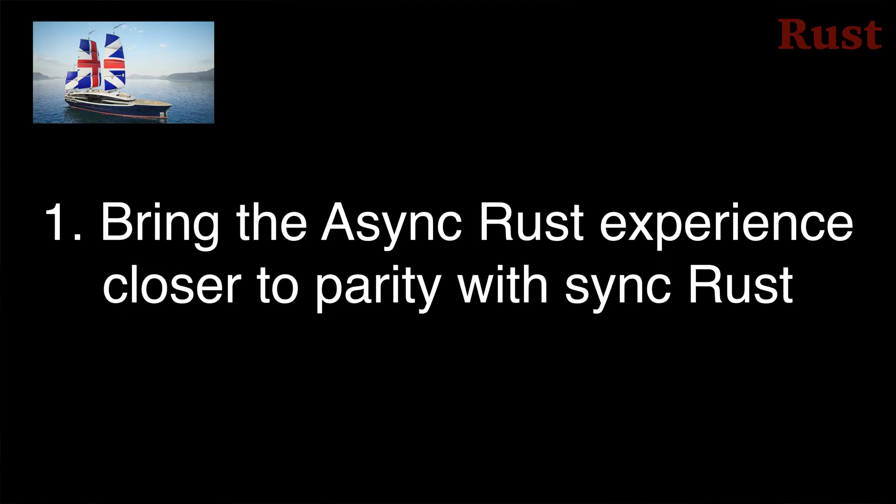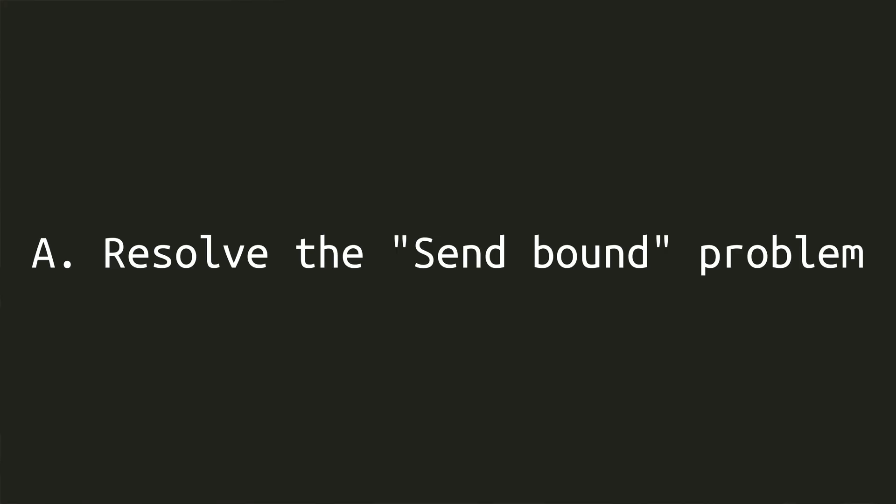Flagship Project 1 aims to bring the async Rust experience closer to parity with regular Rust. This is really a collection of two code subprojects and a meta subproject. The first code subproject is to resolve the send-bound problem so that it is easier to use async functions in traits.